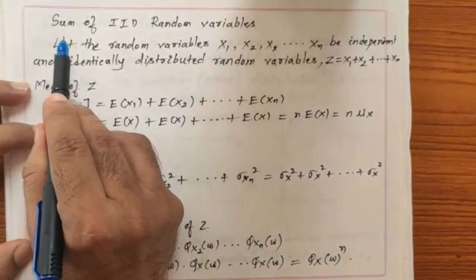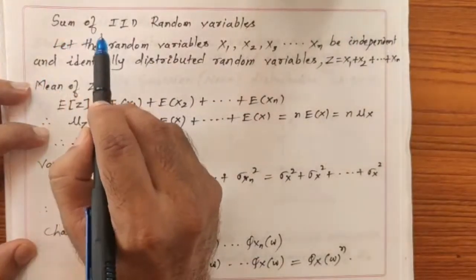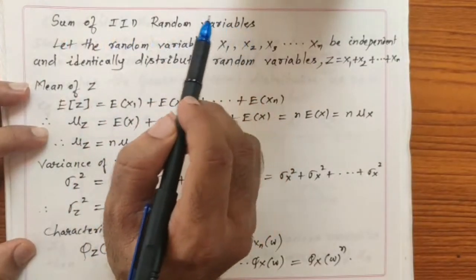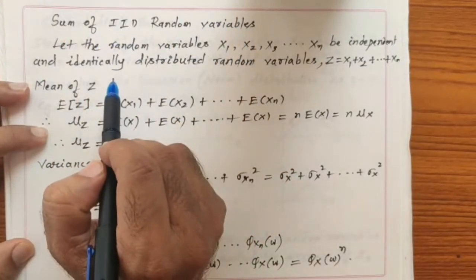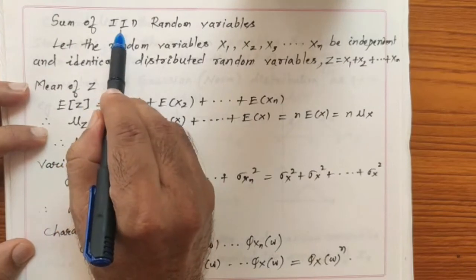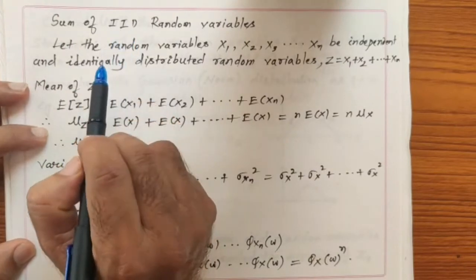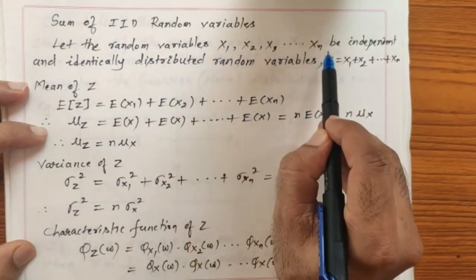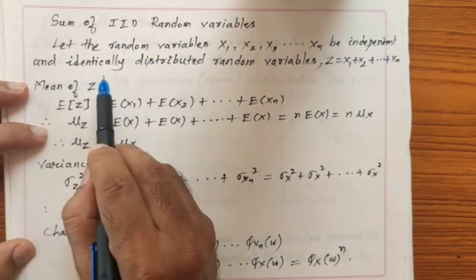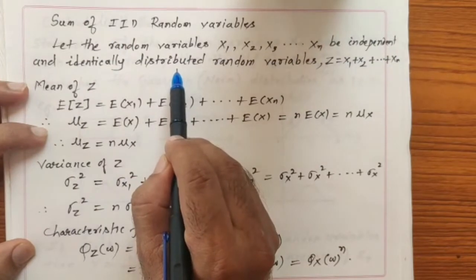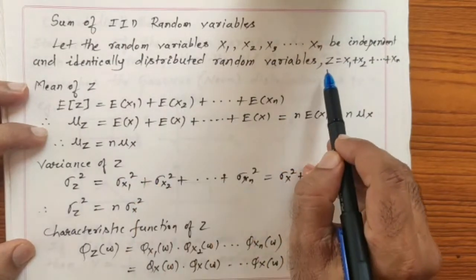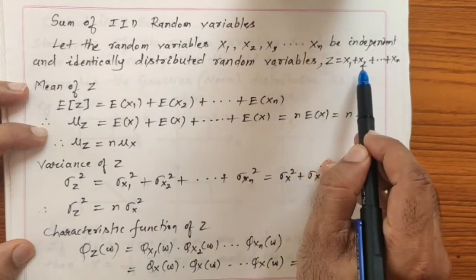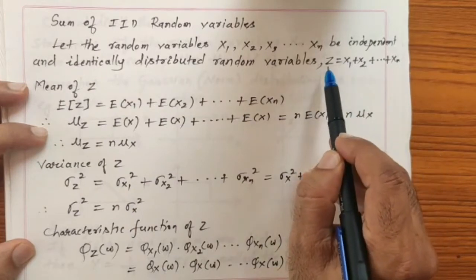Today we will discuss the sum of IID random variables. IID means independent and identically distributed. Let the random variables X1, X2, X3, ..., Xn be independent and identically distributed random variables. Then Z, which is equal to X1 plus X2 plus ... plus Xn, is the sum of IID random variables.